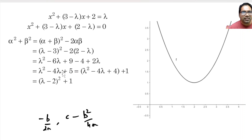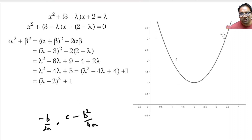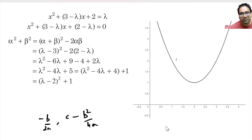This is again a quadratic equation in λ, in the form of λ squared minus 4λ plus 5. We can make this a perfect square, or use another way. A quadratic equation is basically a parabola. The graph of this function is a parabola, and because the coefficient a equals 1, which is positive and greater than 0, the parabola faces upwards. If a were negative, it would face downwards.